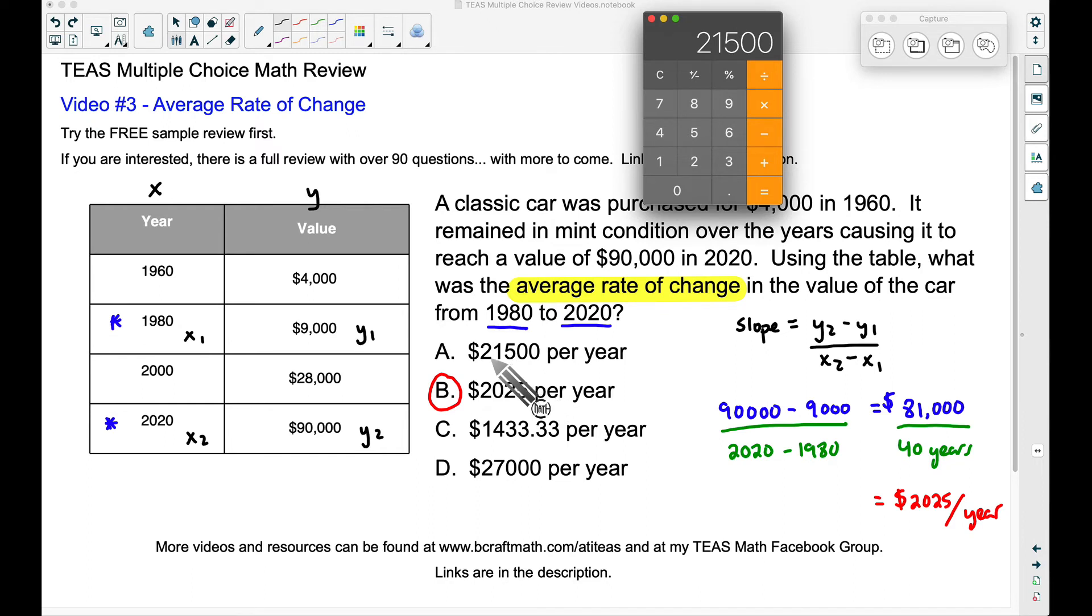Think about this. If a car's value increased by $21,500 per year, per year now, in five years alone, the value of that car would be well over $100,000. But here's how I want you to think about it. Let's bounce back to 1980 because that's the year we're first interested in, $9,000. So that is the value of that car in 1980. Looking at our answer, $2,025 per year over the course of 40 years. So if we add on $2,025 per year over the course of 40 years, essentially we're multiplying by 40. And check out the value. We get $90,000.